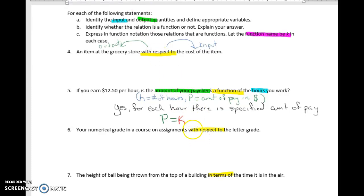It's the input variable K of H. Remember, this is not multiplication, it's just function notation. This is read as K of H, or the output P is equal to K of H.